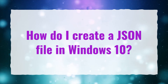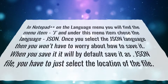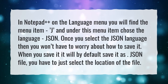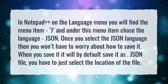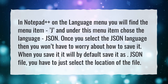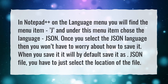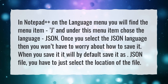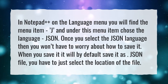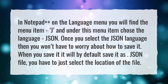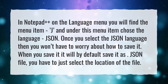How do I create a JSON file in Windows 10? In Notepad++, on the language menu you will find the menu item J, and under this menu item choose the language JSON. Once you select the JSON language, you won't have to worry about how to save it. When you save it, it will by default save it as a JSON file — you just have to select the location of the file.